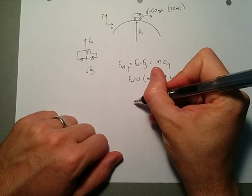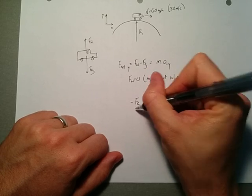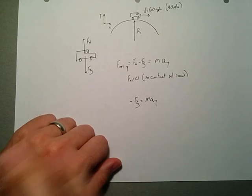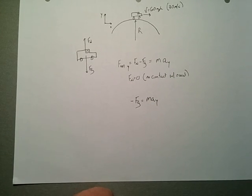So, this gets even easier. We get the minus Fg is equal to mass times the acceleration in the y direction. That's a really easy equation.